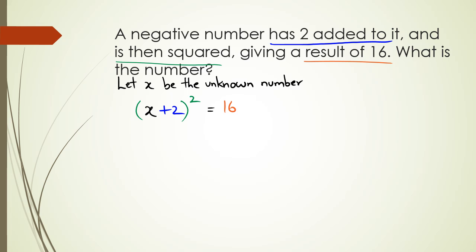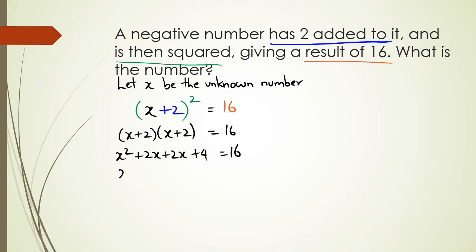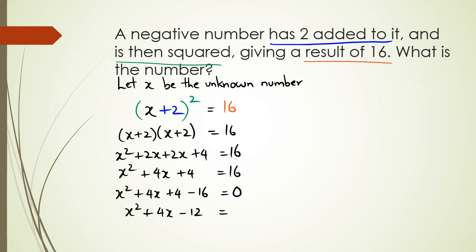Now I need to solve this and figure out the unknown number. The first step is to expand this quadratic, then make one side equal to zero and solve. Expanding: x times x is x², two times x is 2x, 2x again, and 2 times 2 is 4, all equal to 16. So x² + 4x + 4 = 16. Shifting 16 to the left: x² + 4x - 12 = 0.